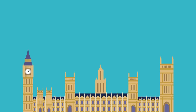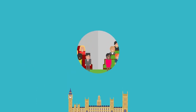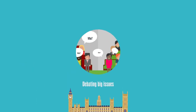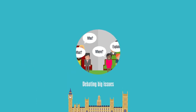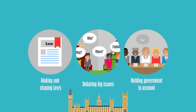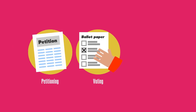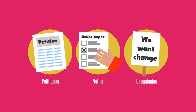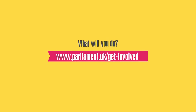Parliament sits at the heart of UK democracy, debating the big issues of the day, making and shaping laws, and holding the government to account. By voting, petitioning, campaigning and more, you can also get involved with the work of Parliament. What will you do?